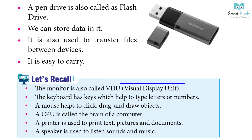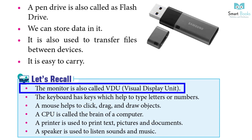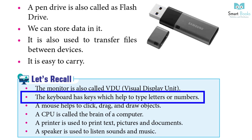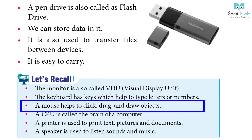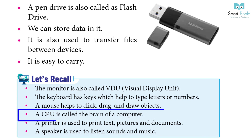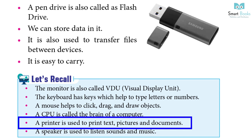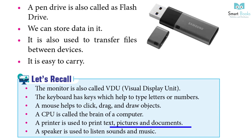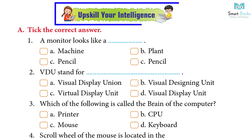Let's Recall: The monitor is also called VDU. The keyboard has keys which help to type letters or numbers. A mouse helps to click, drag and drop pictures. A CPU is called the brain of a computer. A printer is used to print text, pictures and documents. A speaker is used for listening to sounds and music.